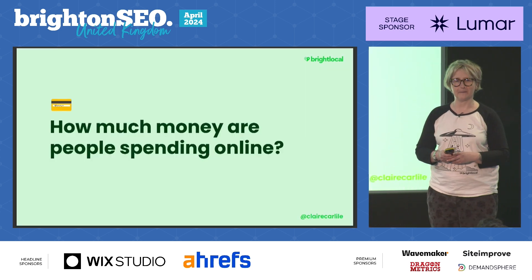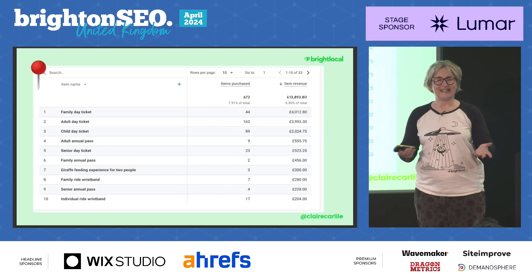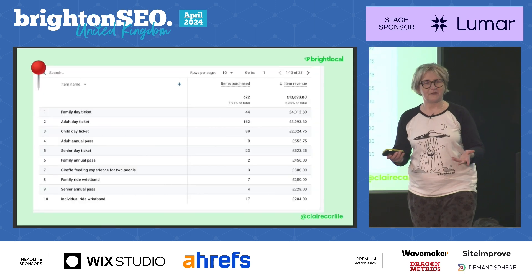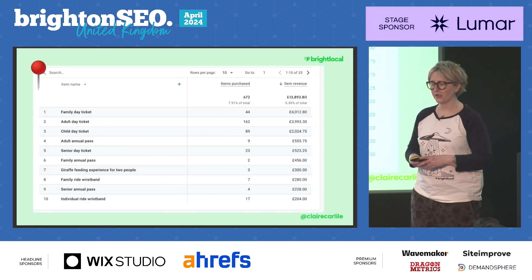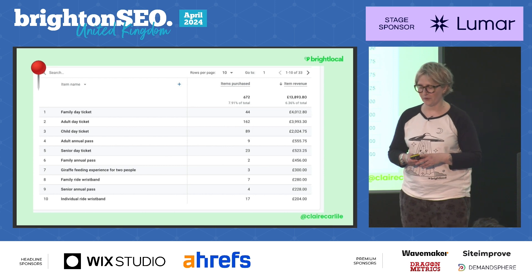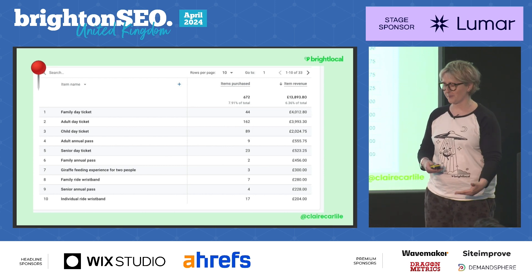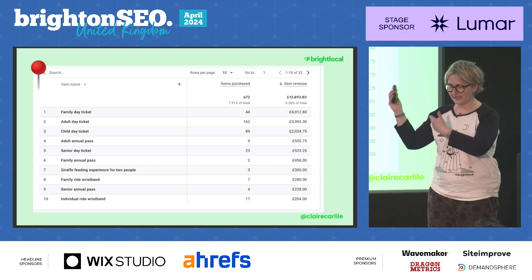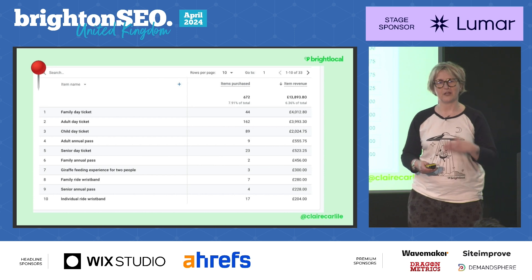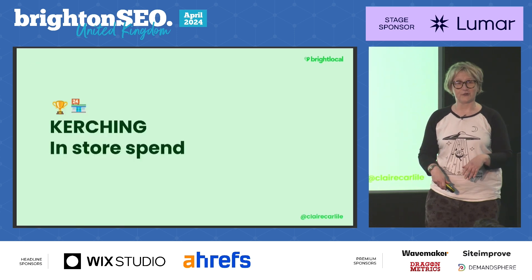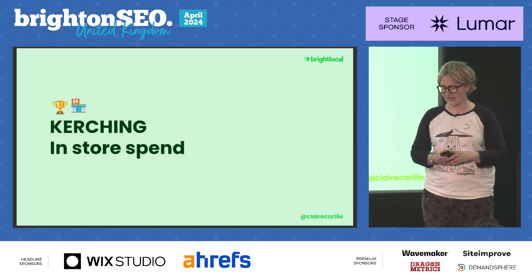How much money are people spending? It's easy to see if you've tagged up your UTM codes — you go into GA4, apply the filter for traffic from Google Business Profile. This is an attraction I work with, and you can see very quickly that it is driving lots of spend.